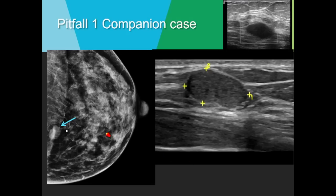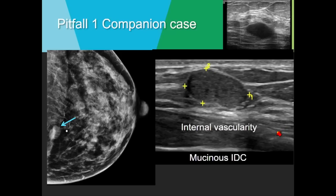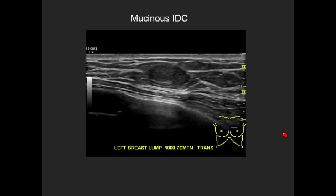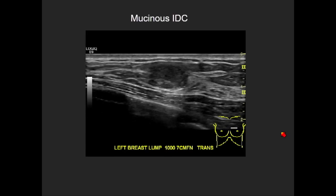Another companion case: a 52-year-old woman with a new palpable mass overlying the pectoralis, with well-circumscribed margins that are oval. At ultrasound it also has many benign features — well-circumscribed margins, posterior acoustic enhancement, oval and parallel. Luckily this case did have internal vascularity and was biopsied, and shown to be a mucinous invasive ductal carcinoma.